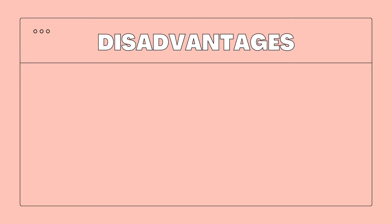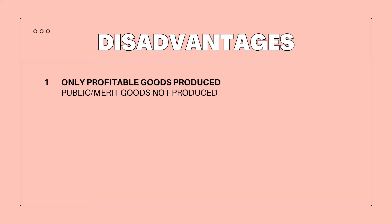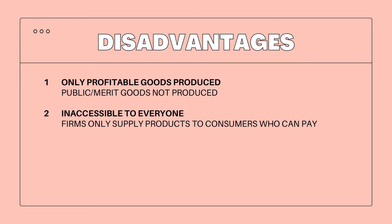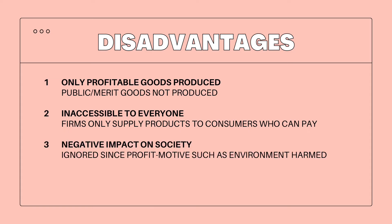We've come to the disadvantages of market economic system. First is that only profitable products are made. Public goods are less likely produced, and not everyone has access since firms supply to customers who are able to pay. The negative impacts are ignored.